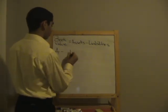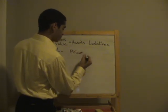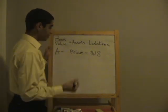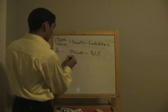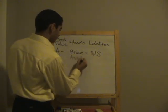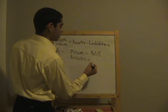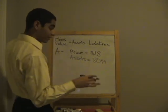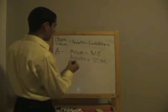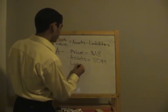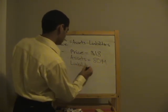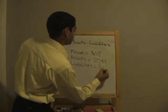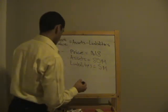I'm going to give you an example. Company A: the price per share is $18. Their assets — if they sold everything — would be $80 million. Their liabilities, the things they need to pay off, the financial payments they need to meet, are $5 million.